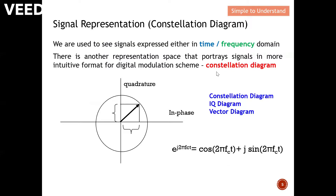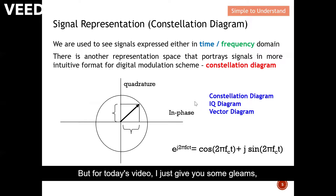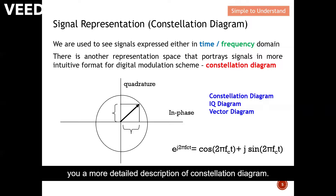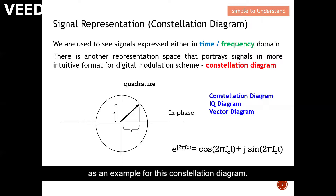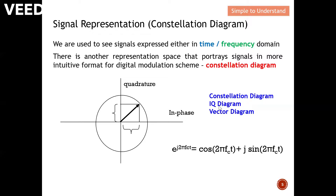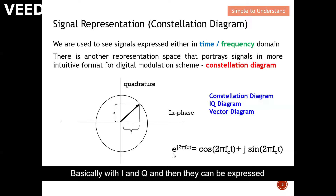We are very used to seeing signals expressed in time or frequency domain. Now, this constellation diagram — also called an IQ diagram or vector diagram, they all mean the same thing — is what I'll introduce today. I'll give a more detailed description on the next video, but today I'll use a simple BPSK (Binary Phase Shift Keying) example. Basically it has an I and Q axis and can be expressed mathematically as shown here.